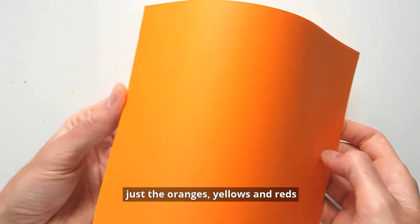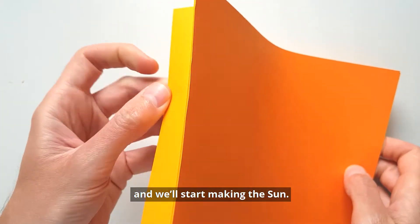So let's start. Bring in your colored paper, just the oranges, yellows, and reds, and we'll start making the Sun.